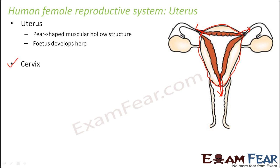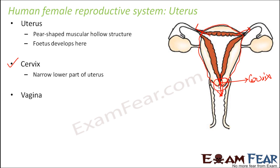Next to the uterus is a structure called the cervix. The cervix is the narrow part of the uterus — as you go down, the uterus gradually becomes narrow, and the most narrow part is called the cervix.